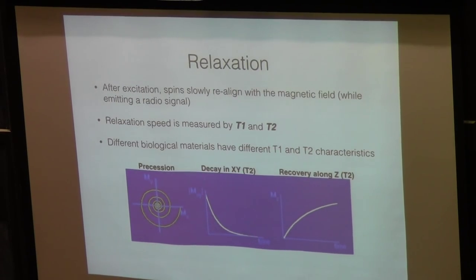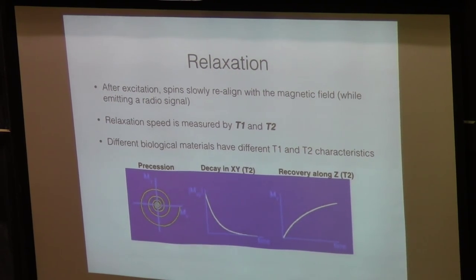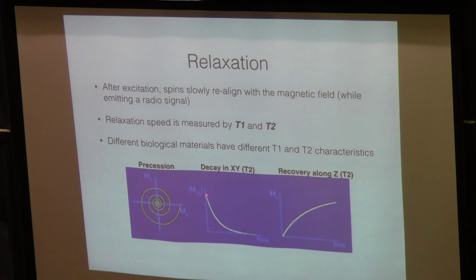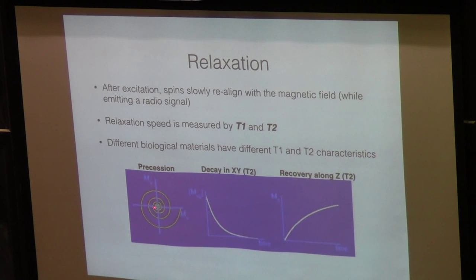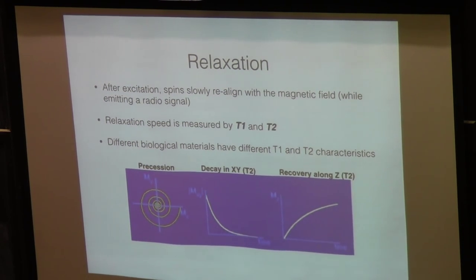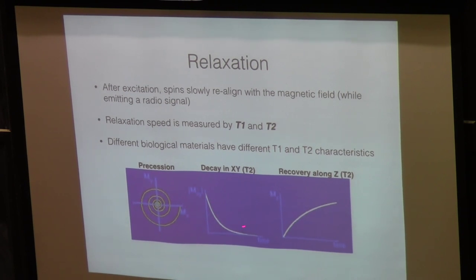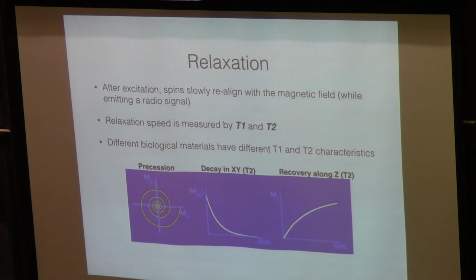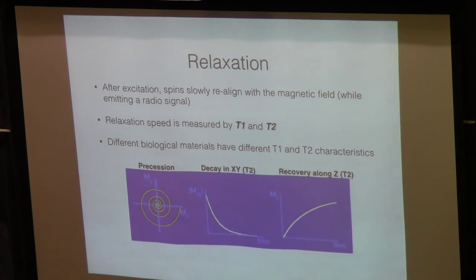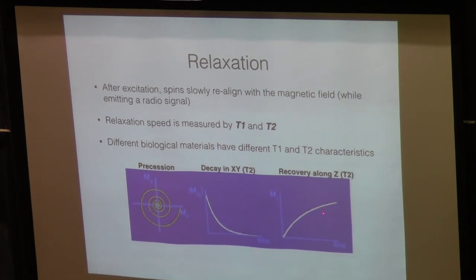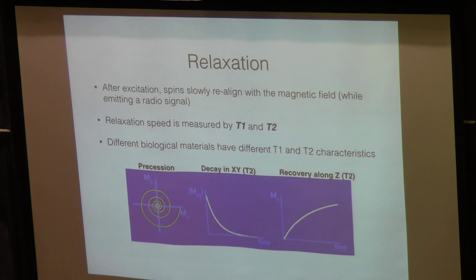After excitation the spins will slowly realign with the magnetic field. The relaxation speed is measured by T1 and T2 — T2 describes how the magnetic field decays in the x-y axis and T1 describes recovery along the z-axis. The atom is given a pulse and slowly decays; the decay and recovery of that magnetic field is what gives us the MRI signal. Different tissues have different T1 and T2 parameters, and that's how we can distinguish what they are.